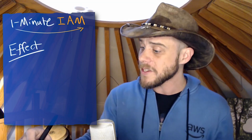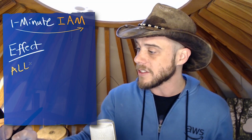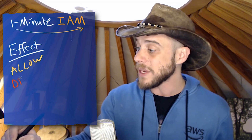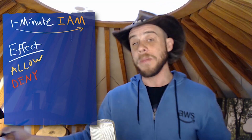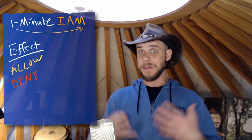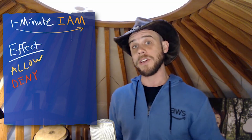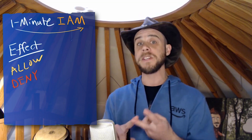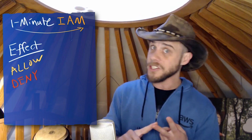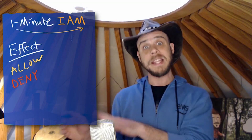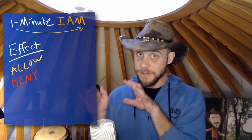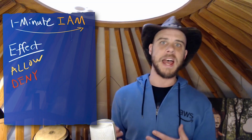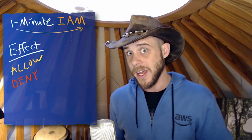This effect element is exactly how we allow something or how we deny some sort of an action based on what the statement is defining. You have to look at the rest of the elements in there, like the resource, and specifically what sort of actions they might be performing. In the end, the effect element ultimately determines whether we're allowing or denying based on the criteria you provide.